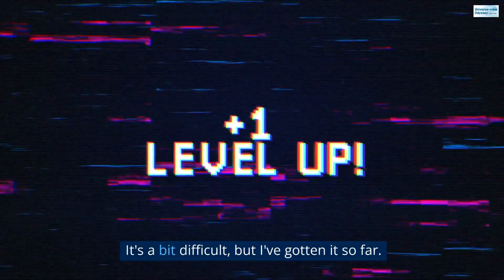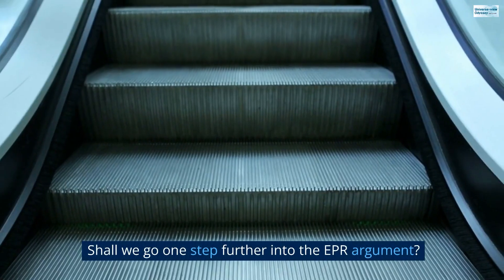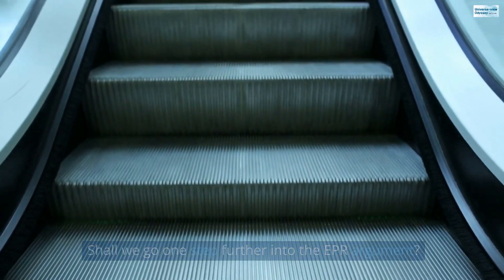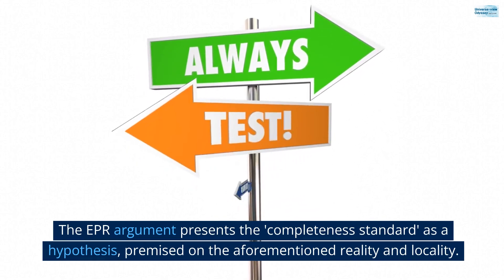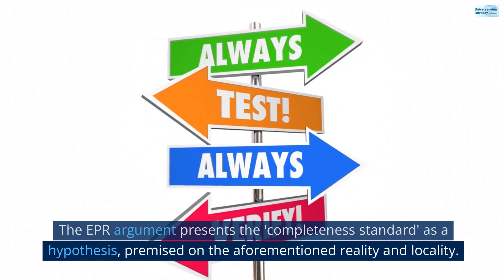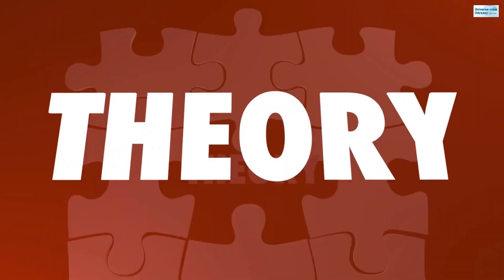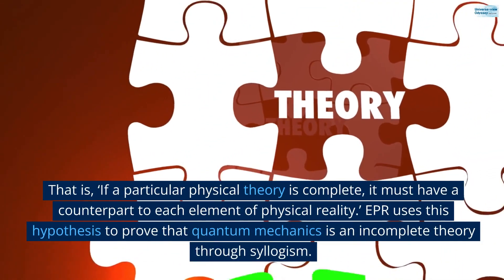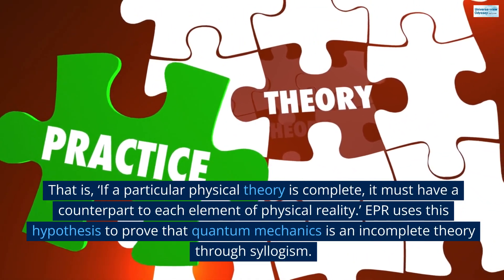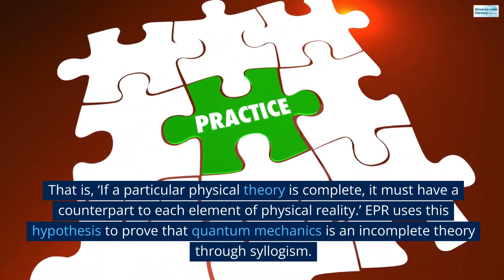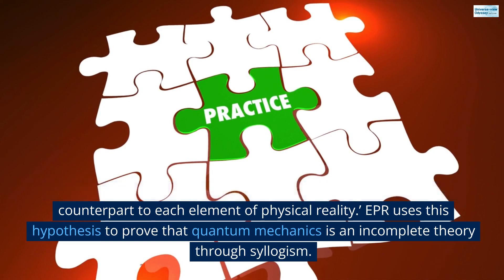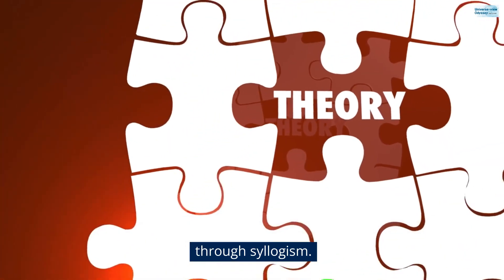It's a bit difficult, but I've gotten it so far. Shall we go one step further into the EPR argument? The EPR argument presents the completeness standard as a hypothesis, premised on the aforementioned reality and locality. That is, if a particular physical theory is complete, it must have a counterpart to each element of physical reality. EPR uses this hypothesis to prove that quantum mechanics is an incomplete theory through syllogism.